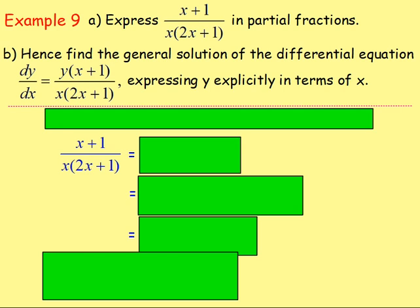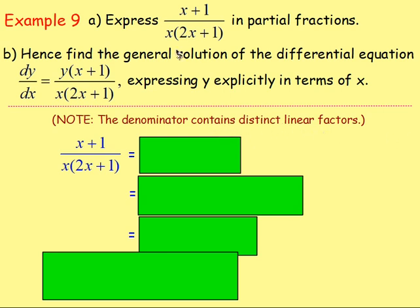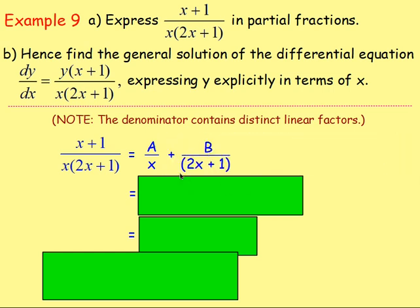Example 9: express (x plus 1) over x(2x plus 1) in partial fractions. And for part b, hence find the general solution of the differential equation dy/dx equals y(x plus 1) over x(2x plus 1), expressing y explicitly in terms of x. You can see that the denominator contains distinct linear factors, so we can write the fraction as a over x plus b over (2x plus 1). If you're unsure about any of these, look back to chapter 1 with partial fractions.